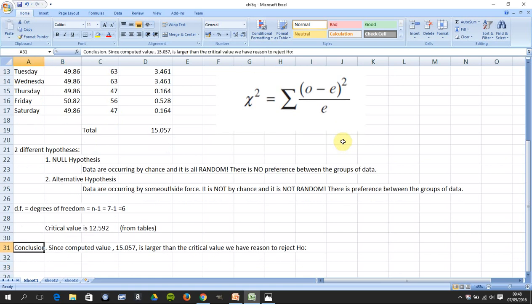So the conclusion: since the computed value 15.057 is larger than the critical value of 12.592, we have reason to reject the null hypothesis. Or in other words, we have reason to think that there is some outside agency at force, things are not completely by chance.